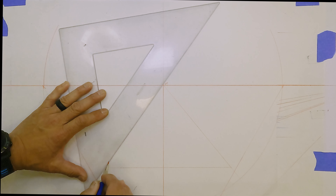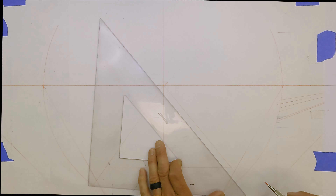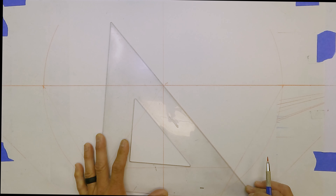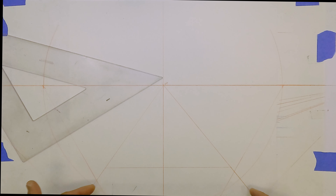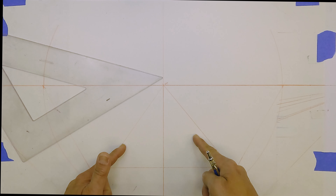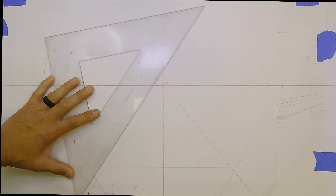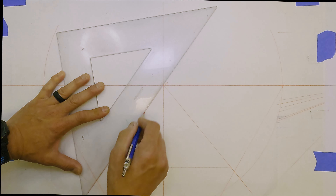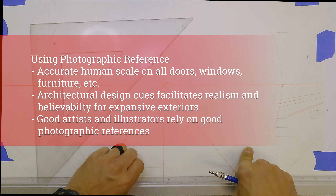We can probably start off with this plane converging to the vanishing point like so. This plane going into the drawing will actually converge to the vanishing point itself. We're going to keep all our construction lines in, because that would be appropriate.